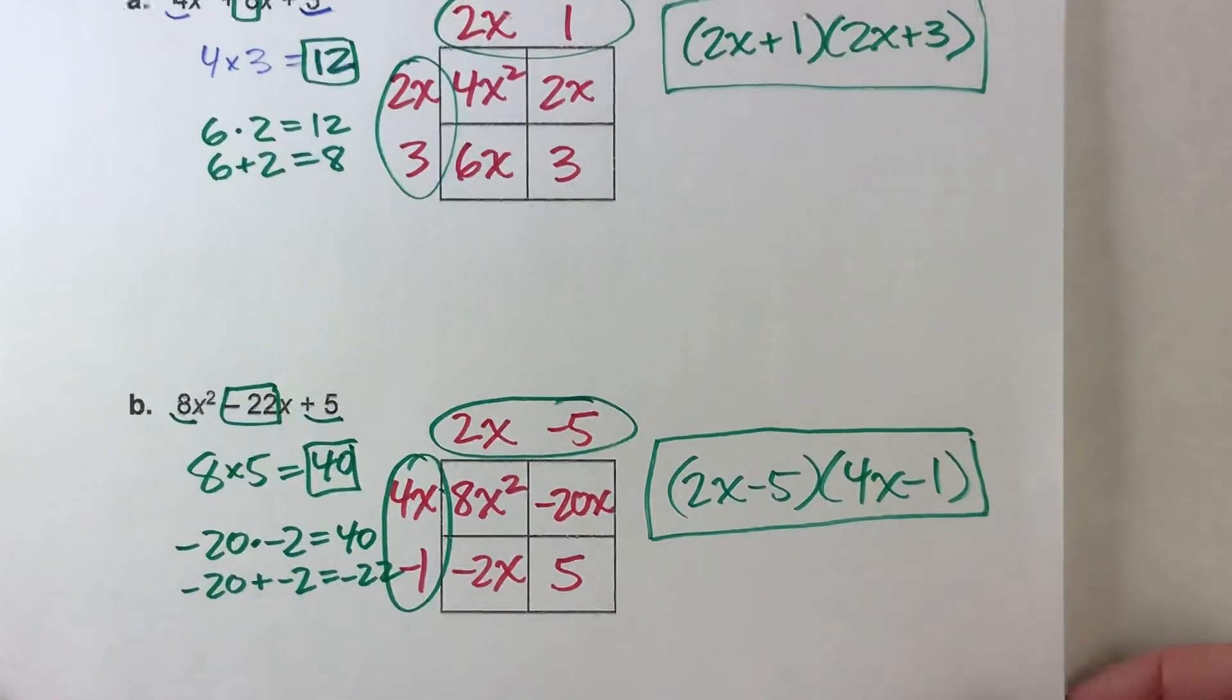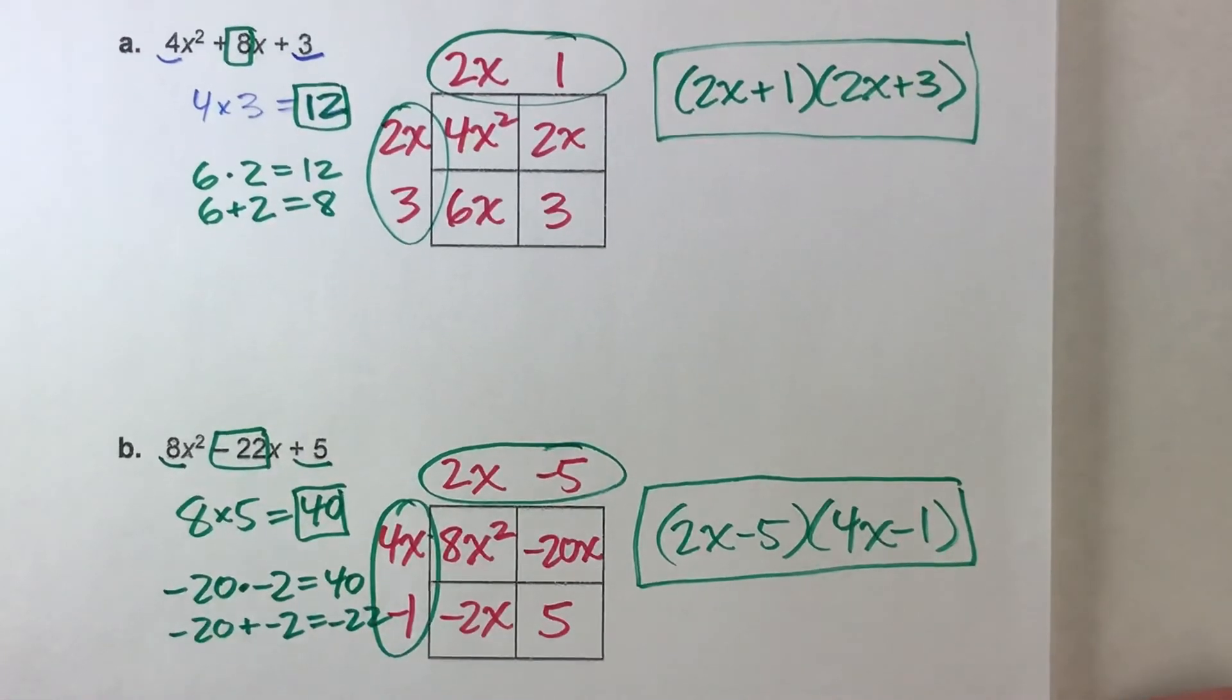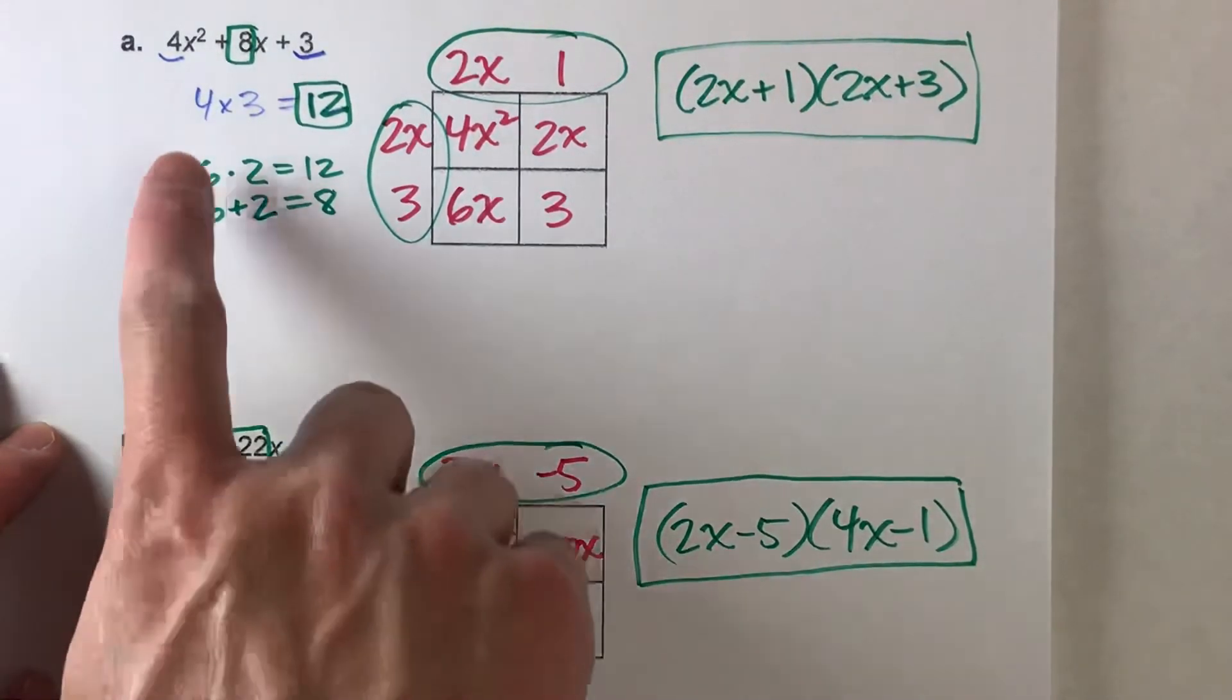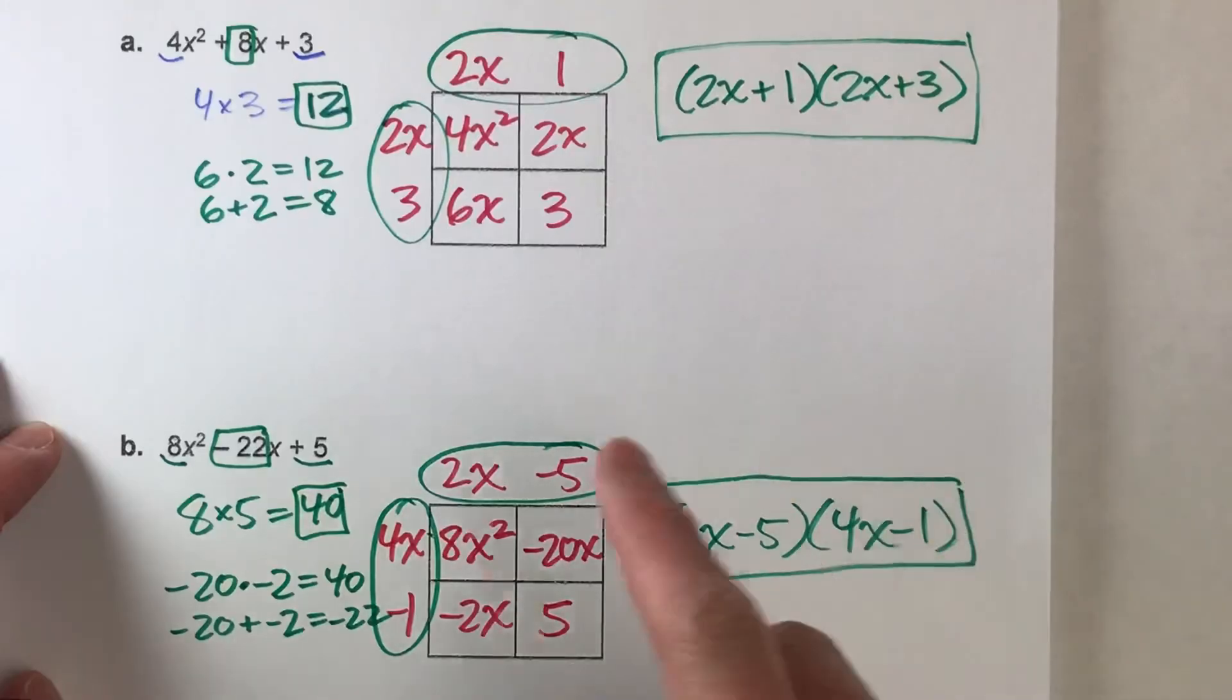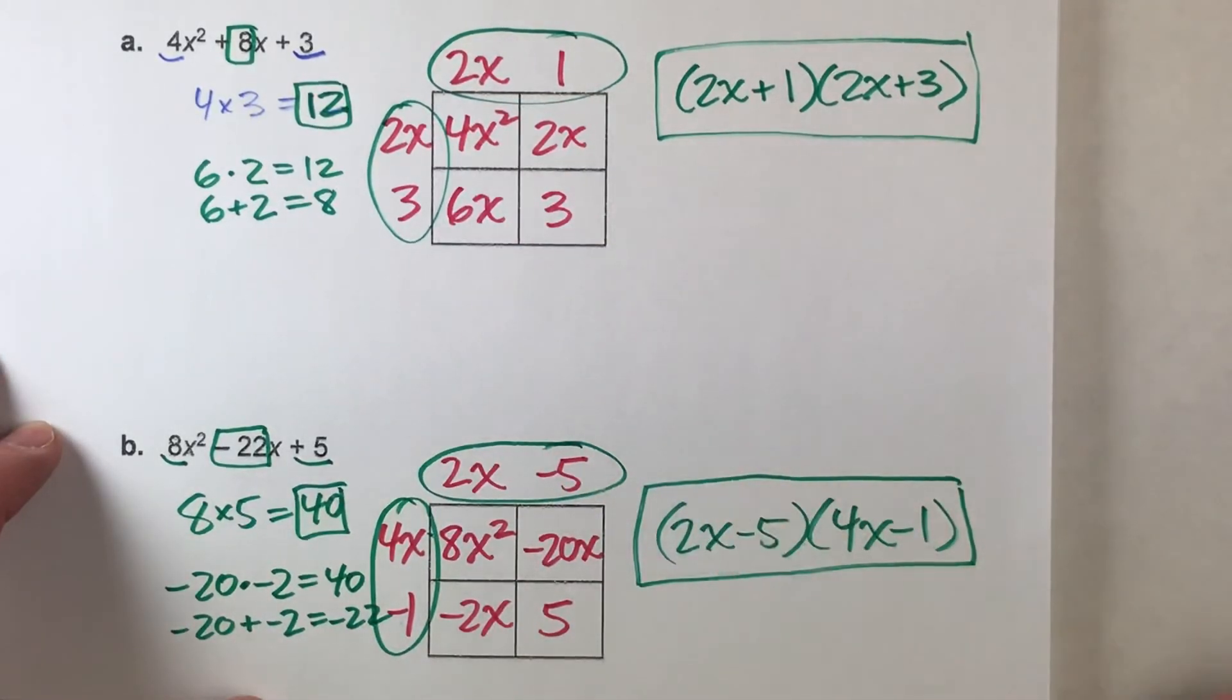So, notice, it's a little bit tricky factoring these quadratics. Anytime you have a number in front of x squared, it makes it a little bit harder. But, hopefully, this area model is a good way to visually keep track of all the numbers and try to remember what you're doing.